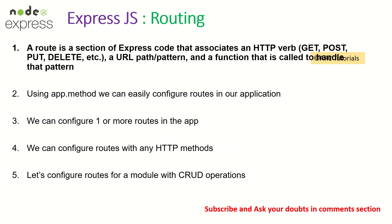What is a route? A route is a section of Express code that associates to an HTTP method, which will have a function that is called to handle that particular pattern. So a route has two parts: one, the association with the HTTP verb, and second, a function which will handle that particular processing or logic.